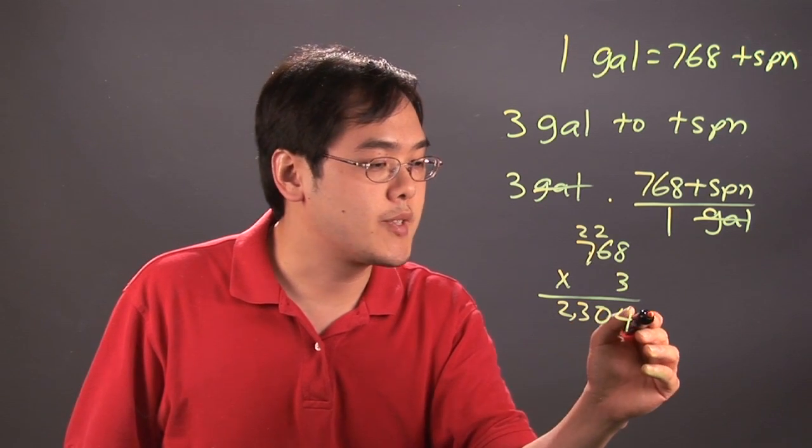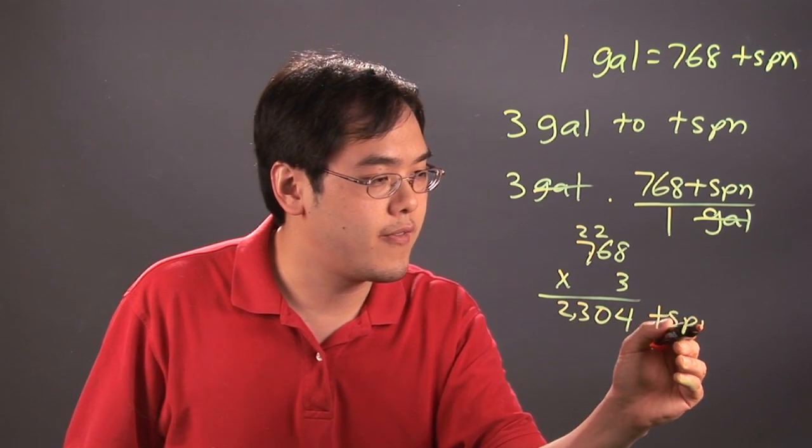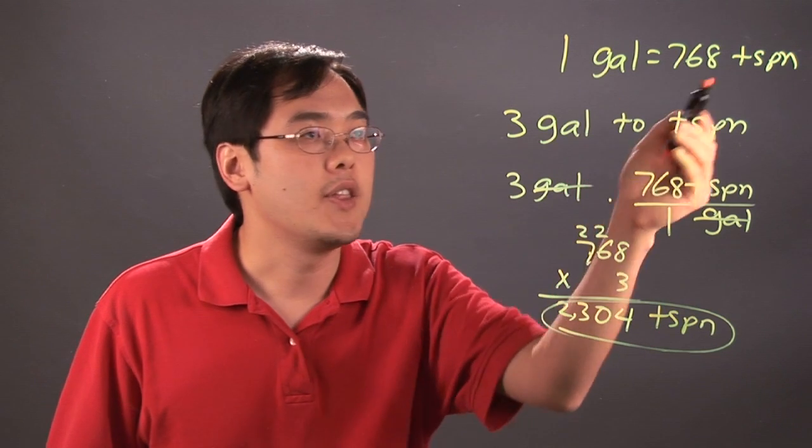So really, 3 gallons amounts to be 2,304 teaspoons, which is not too surprising given the relationship.